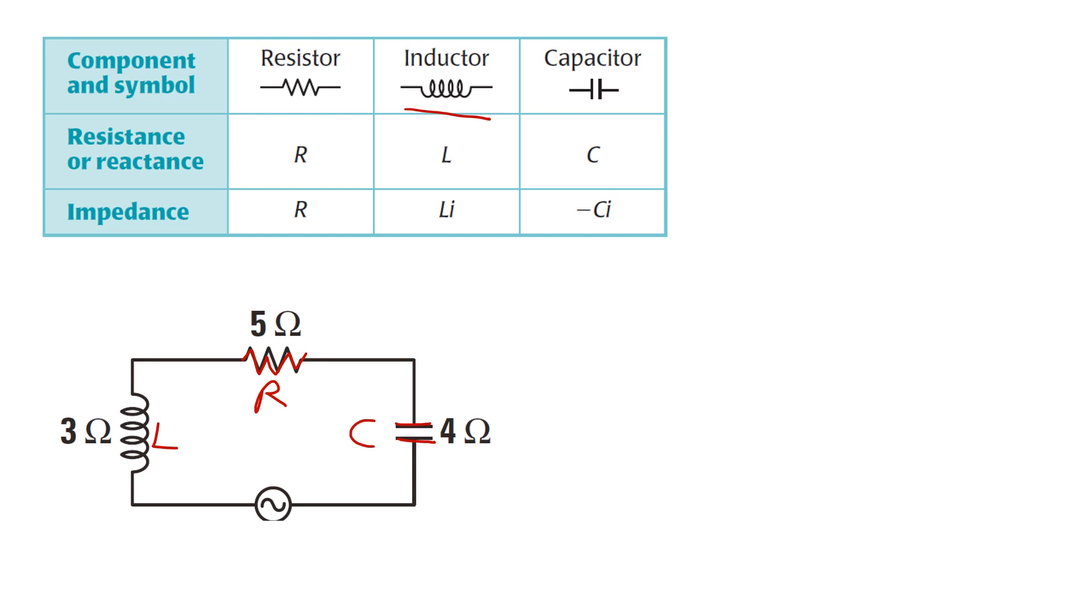So that's the component and the symbol. Now the resistance or the reactance is denoted by the numbers next to each component. For the resistor R is 5 ohms, the reactance of the inductor is 3 ohms, and for the capacitor the reactance is 4 ohms. Therefore the impedance, just follow the formula. The impedance is 5 ohms, the impedance for the inductor, we just have to put 3i ohms.